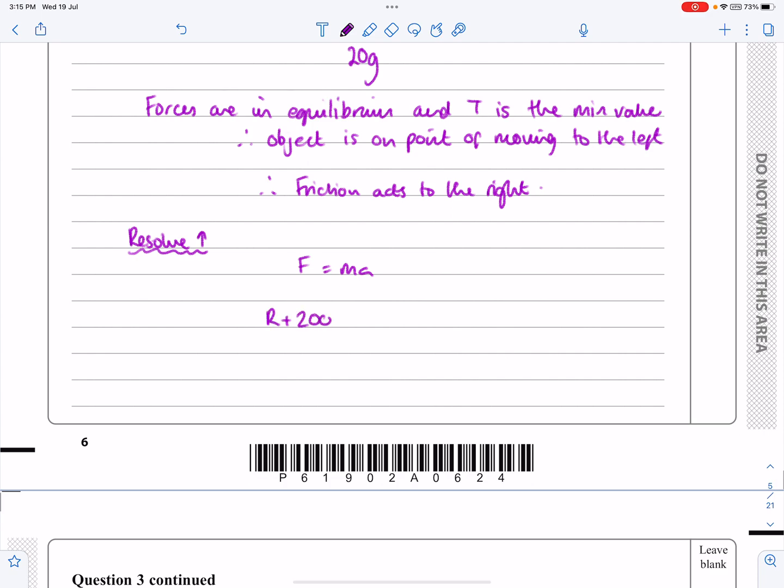So I'm going to say R plus 200 sine 15 plus T sine 25. Those are all the forces going up. I just say is equal to 20G. There's one of my equations that I'll be using.